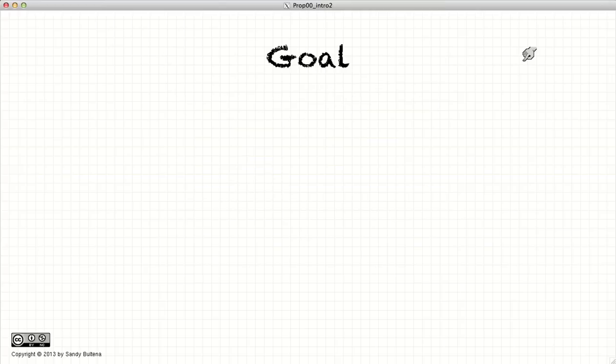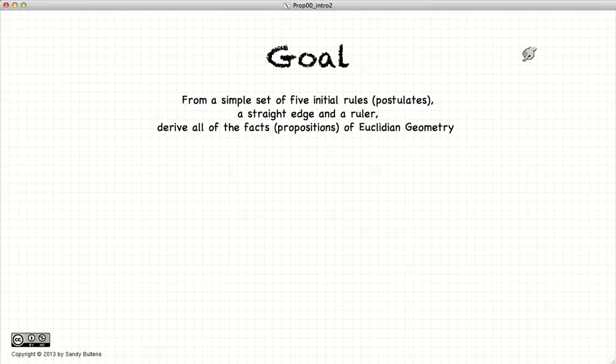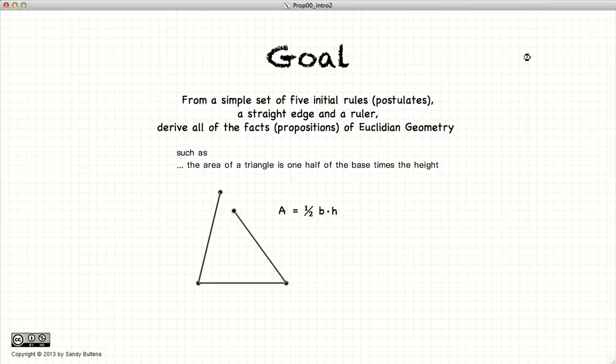So what is the goal of these tutorials? Well, the goal is to derive the geometric principles from five basic rules, or Euclid's postulates, using only two tools, a straight edge and a ruler. So for example, if you all remember this from high school geometry, we are going to prove that the area of the triangle is equal to one half the base times the height. Instead of just saying that it is true, we will prove that it is true.